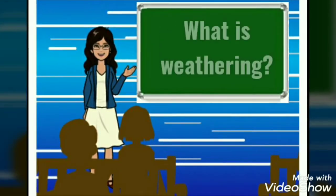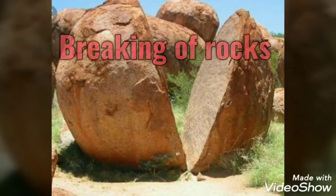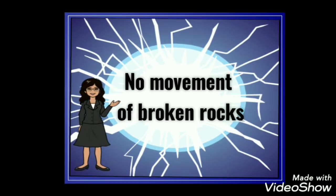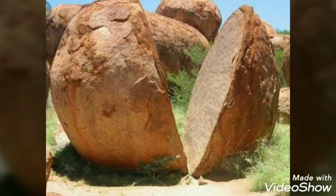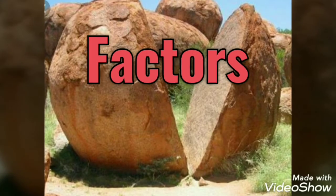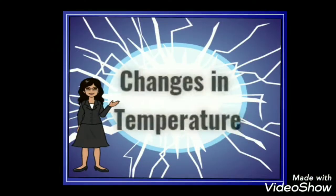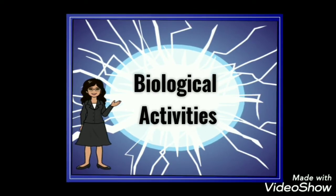What is weathering? Weathering refers to the breakdown, disintegration, and decomposition of rocks. It should be noted that this process does not involve the movement of broken rocks. Weathering of rocks is affected and controlled by a number of factors such as changes in temperature, frost action, biological activities, etc.